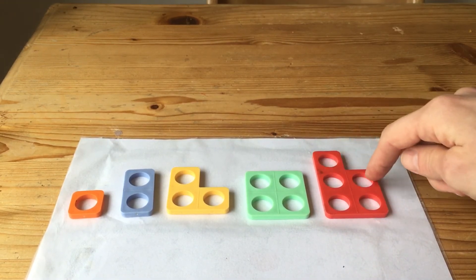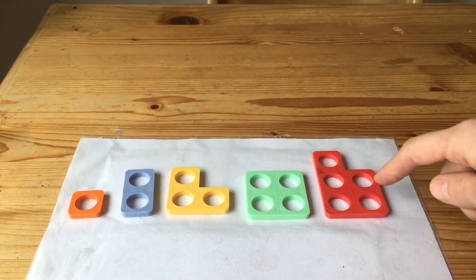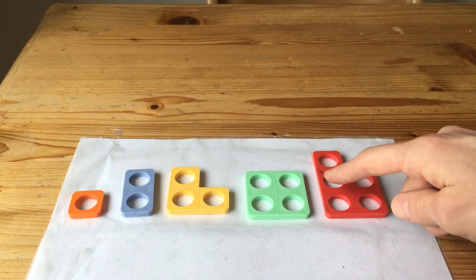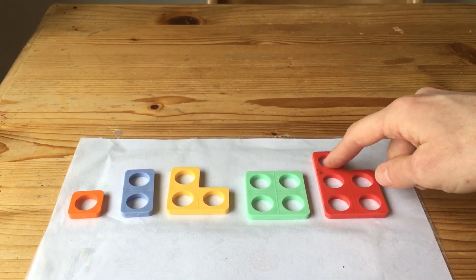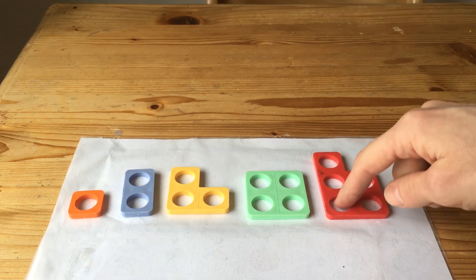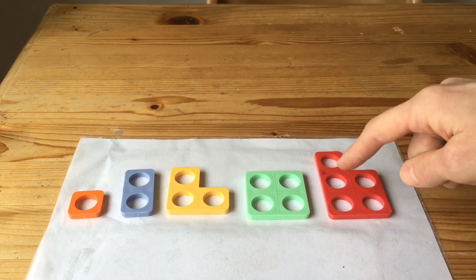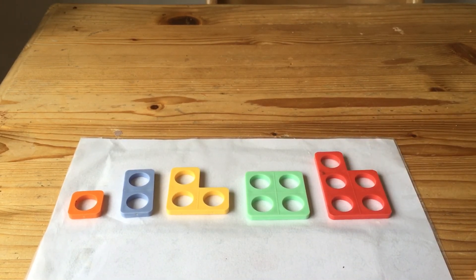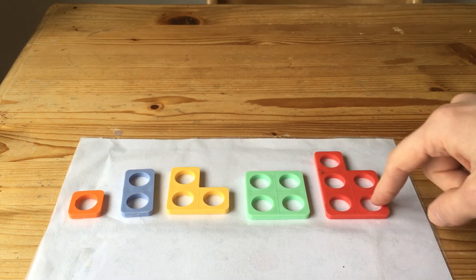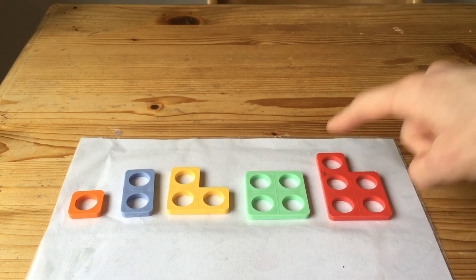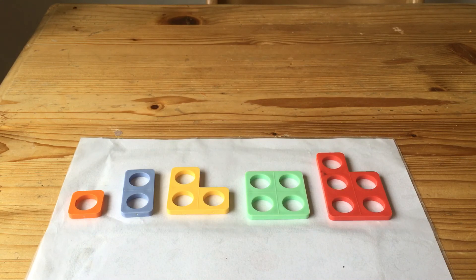Can you see the square still? But what's the square got on top of it? That's right, it's got one on top. One, two. Oh, it's tricky to count this one. Let's start from the bottom and work up. One, two, three, four, five. That's a five.